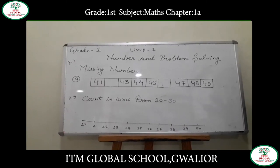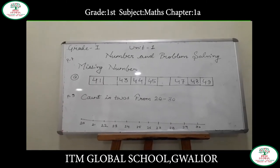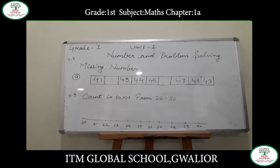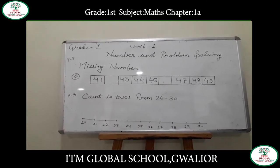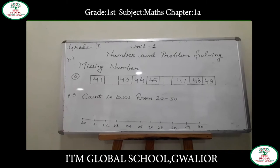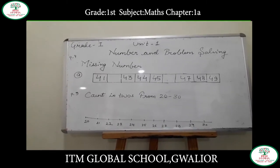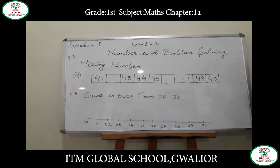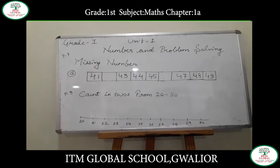On page number 7, the first question is about finding the missing numbers in a sequence. For finding the missing number, you should always count forward, or if it is going back, then you should count backward.